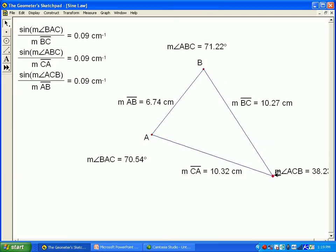That's what the sine law says. The ratio of the sine of any angle to its opposite side is the same for all three angle-side pairs in the triangle.